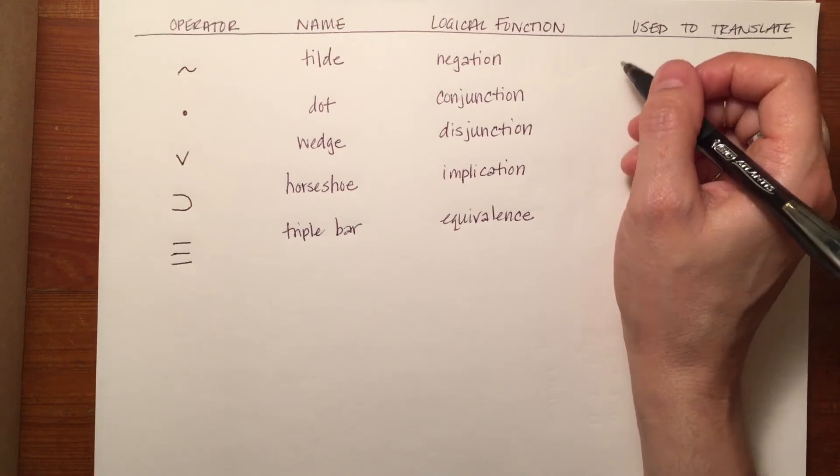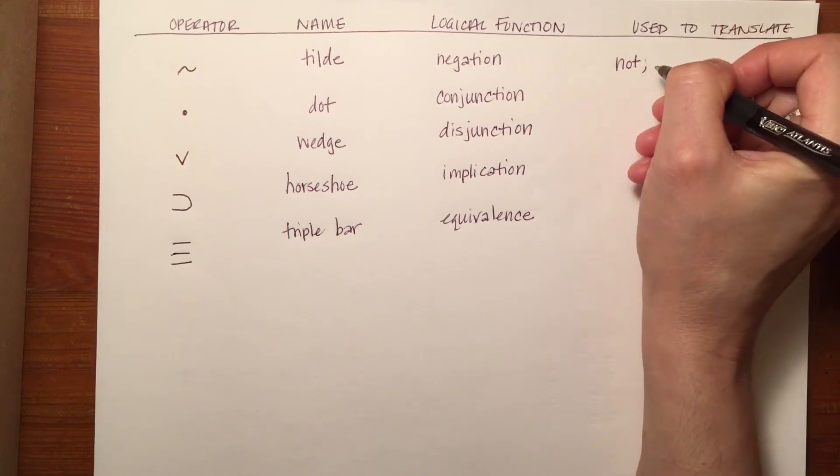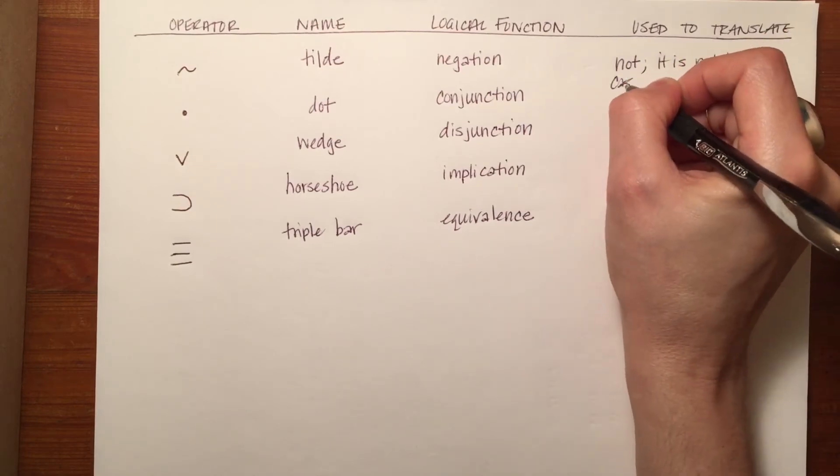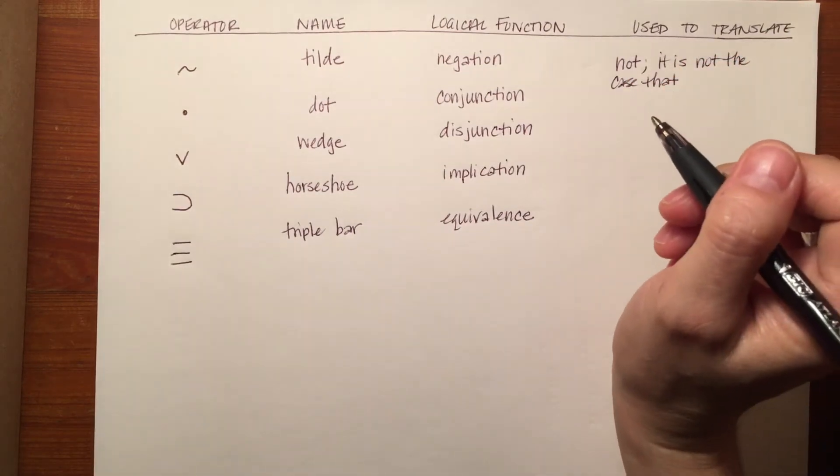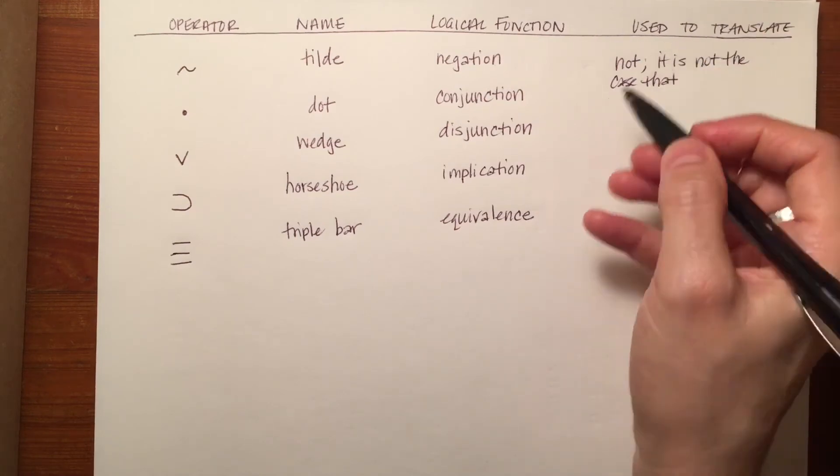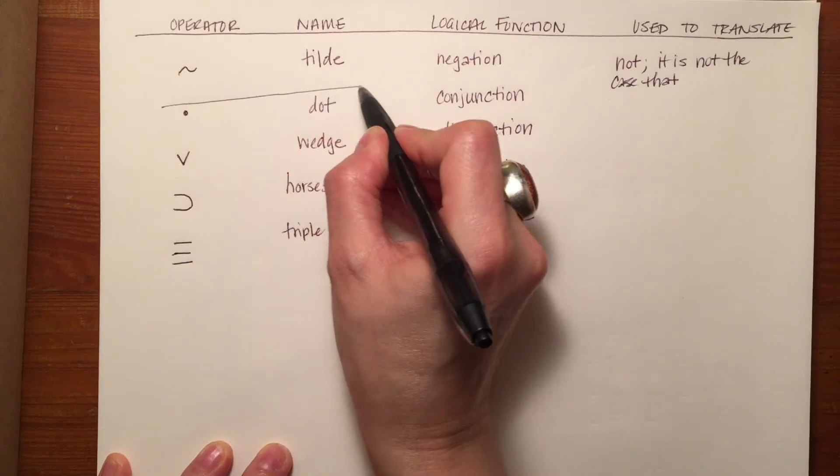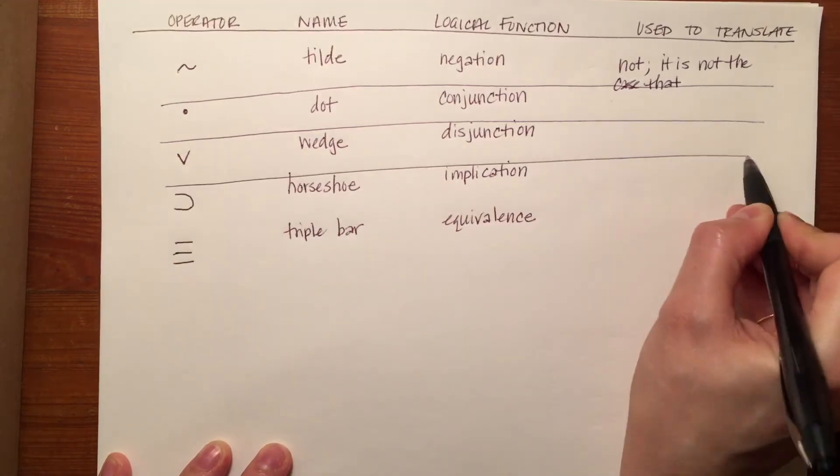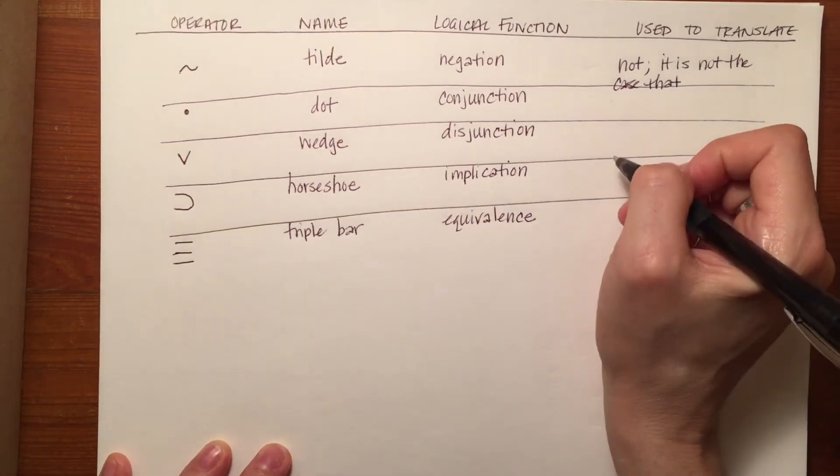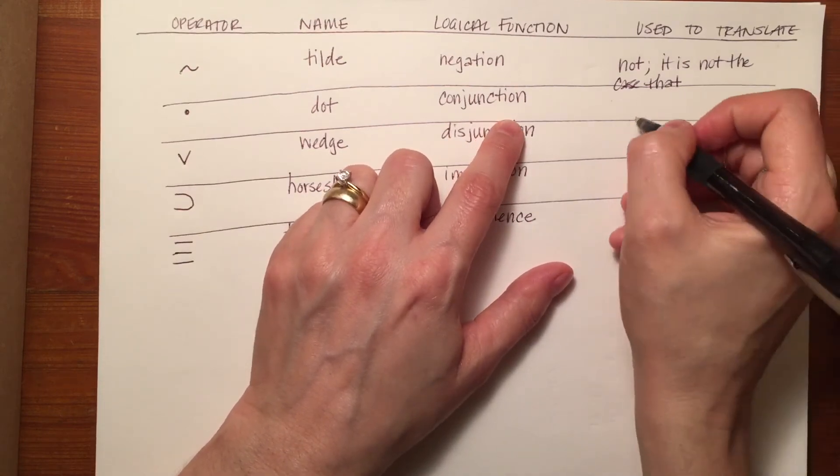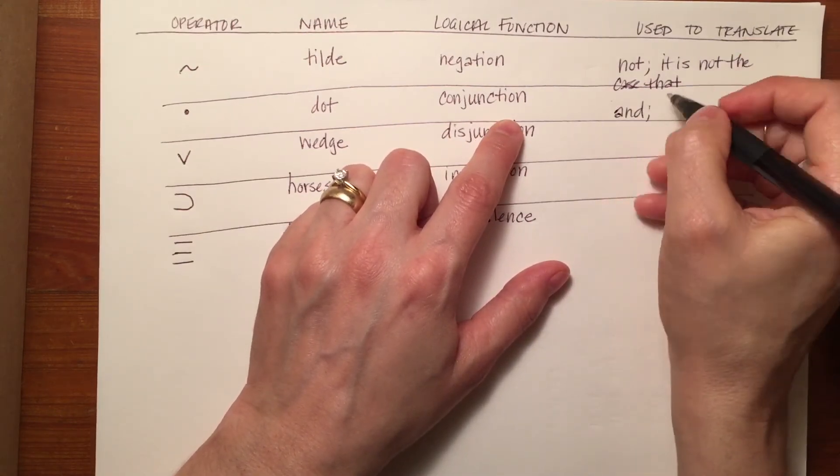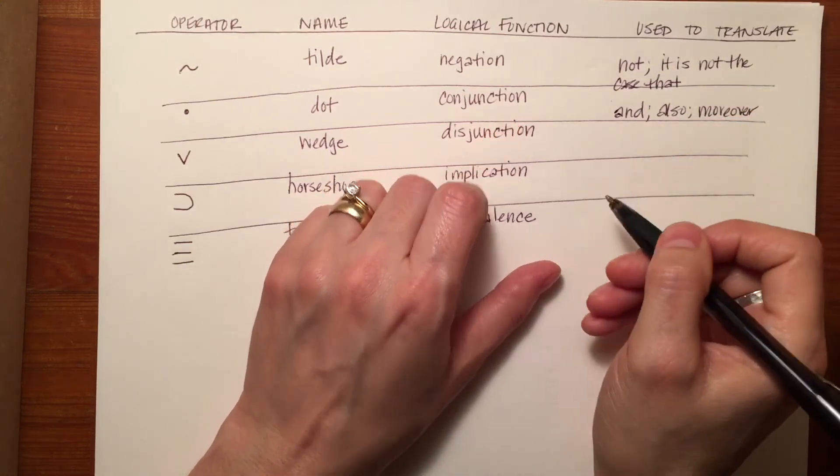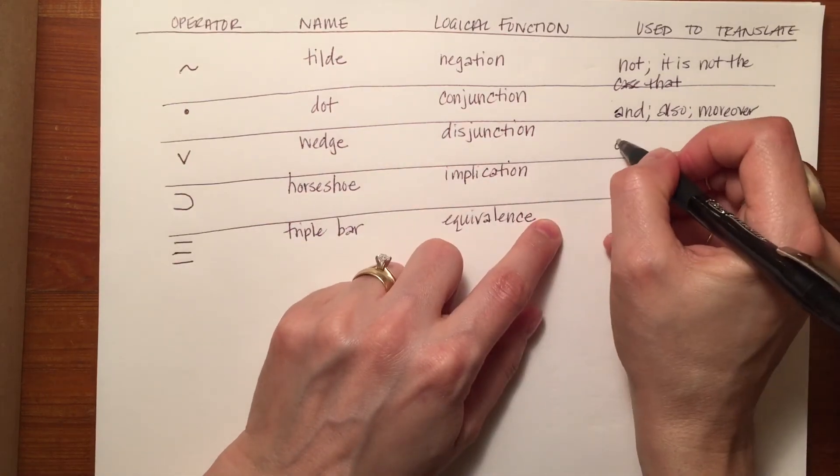So, the tilde is normally used to translate the word 'not' or the phrase 'it is not the case that.' The dot is used to translate 'and' - I'll try to draw a little line between them so that they're a bit easier to see.